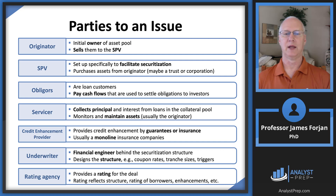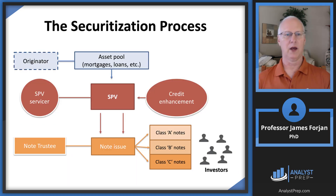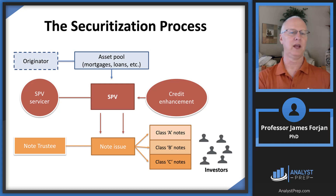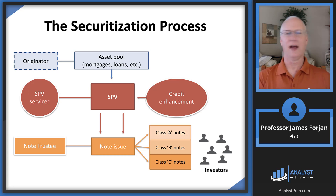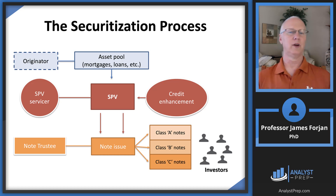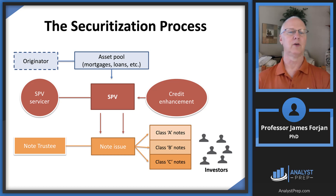Ratings agencies come in and look at the pool of mortgages. If the pool consists of borrowers like a 58-year-old associate professor of finance who has paid off every debt in his life, with a small mortgage payment relative to his asset base and income, and there are a hundred people like that in the pool, then Moody's or Fitch will come in and say that's probably triple-A rated.